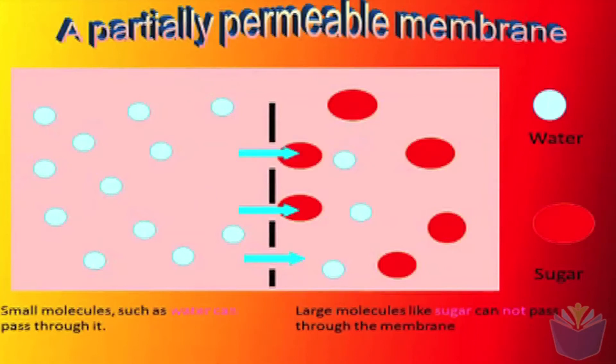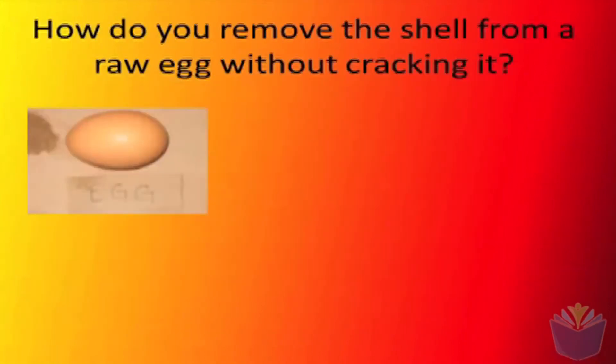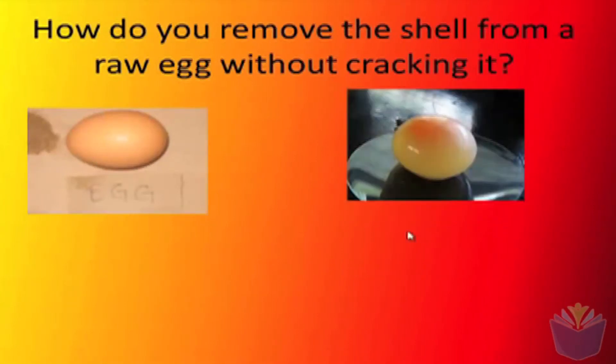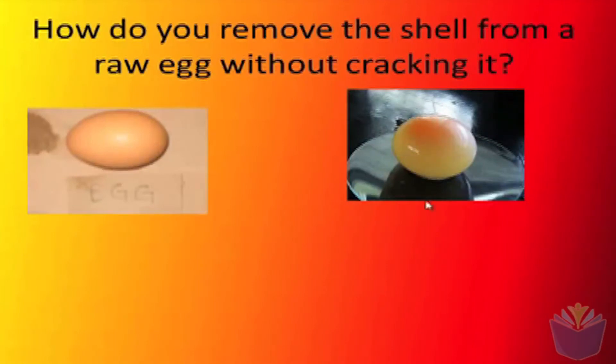Okay, so you can actually demonstrate how osmosis works by using a very simple practical. All you need is an egg, some vinegar and a couple of days patience. And what you're eventually left with is an egg without a shell. Now the rubber egg, as a few people like to call it, is a good demonstration of a very basic cell.